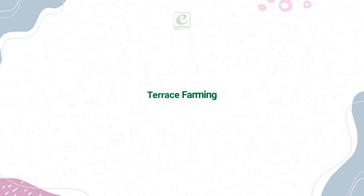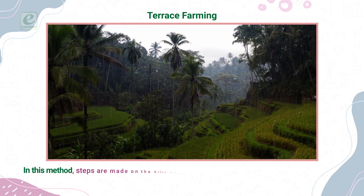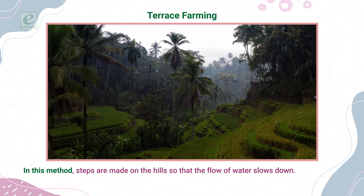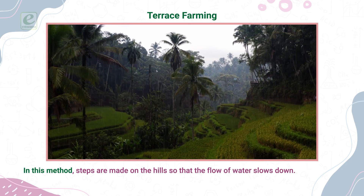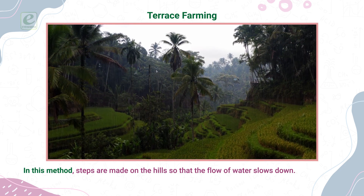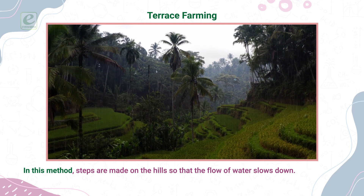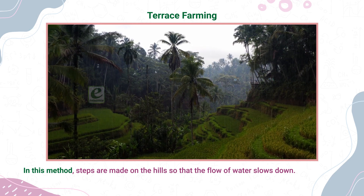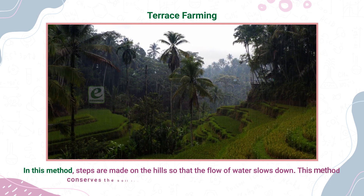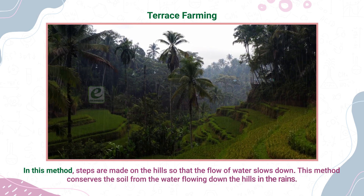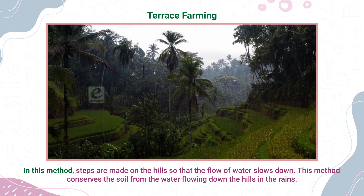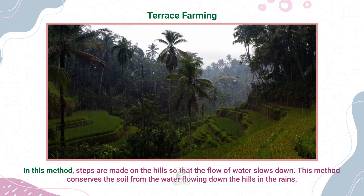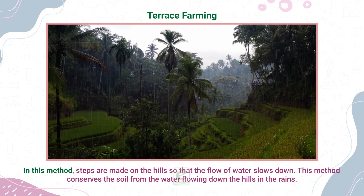Terrace Farming. In this method, steps are made on the hills so that the flow of water slows down. This method conserves the soil from the water flowing down the hills in the rains.